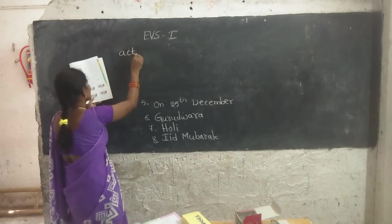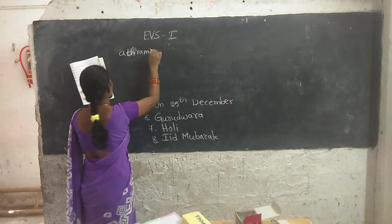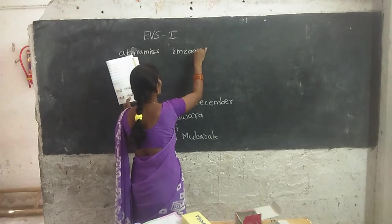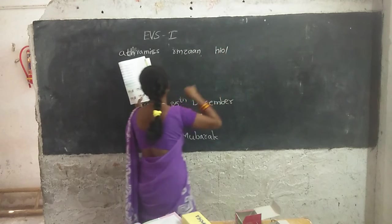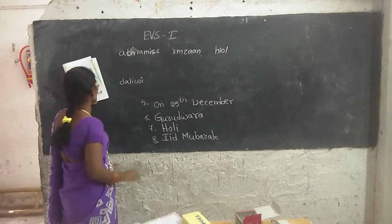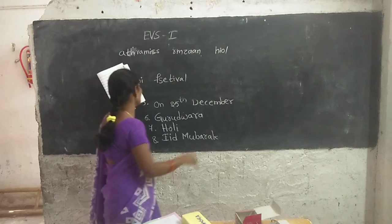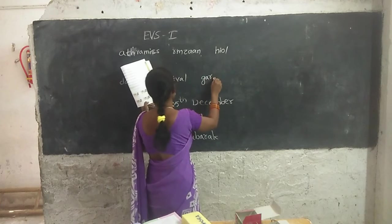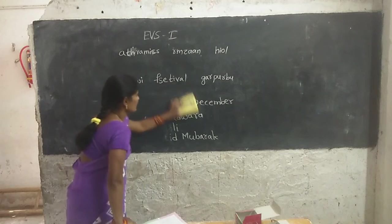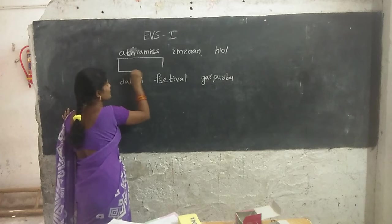The jumbled letters are: C-H-R-I-S-T-M-A-S — this is Christmas. R-A-M-Z-A-N — this is Ramzan. H-O-L-I — this is Holi. D-I-W-A-L-I — this is Diwali.